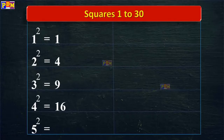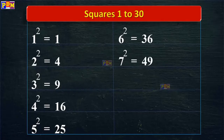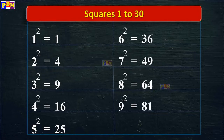5 square is equal to 25. 6 square is equal to 36. 7 square is equal to 49. 8 square is equal to 64. 9 square is equal to 81. 10 square is equal to 100.